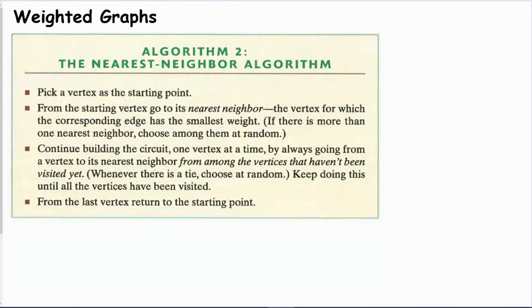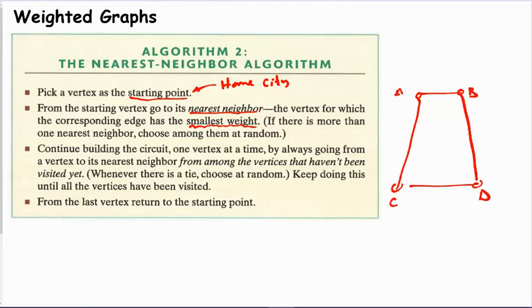So the next is the nearest neighbor algorithm. We have to have a starting point, usually our home city. And then from the starting point, we choose the nearest neighbor. Now the nearest neighbor doesn't mean the closest point on the graph looking at the image. It means the one with the smallest value on the edge. So if I had a drawing here, A, B, C, D, and back to A, I say that from A to B is 11, but from A to C is 2. Even though this edge looks smaller, it has a more expensive cost to it, we would choose this as the nearest neighbor. We would say the nearest neighbor to A is C because it has the least expensive edge that attaches the two vertices.